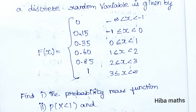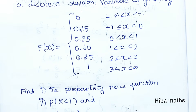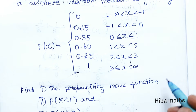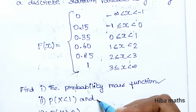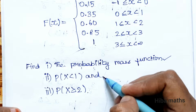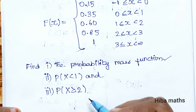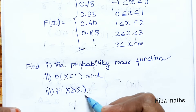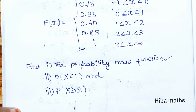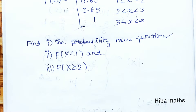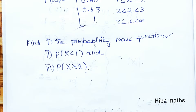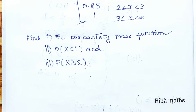So, find the probability mass function, P(x less than 1), and P(x greater than or equal to 2). We can use the cumulative distribution function to find the probability mass function, which will make it easy.